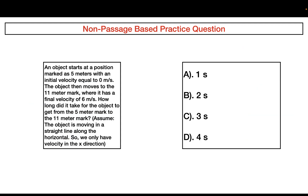The next question: an object starts at a position marked as five meters with an initial velocity of zero meters per second. The object then moves to the 11-meter mark where it has a final velocity of six meters per second. How long did it take to get from the five-meter mark to the 11-meter mark? Assume the object is moving in a straight line along the horizontal. Pause the video and find the correct answer. The correct answer is choice B.